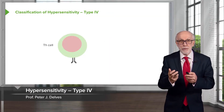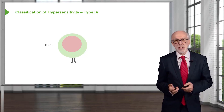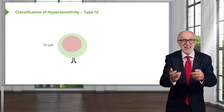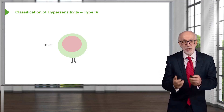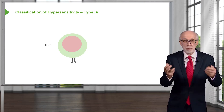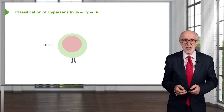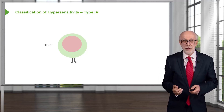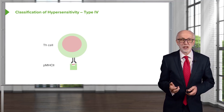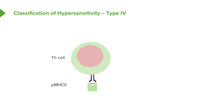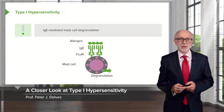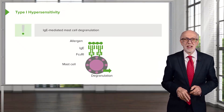Type 4 hypersensitivity is delayed type hypersensitivity. It's called delayed because it takes a little while to get going. With the other three types, antibody is already present and as soon as antigen enters the body the response happens immediately. For T cells, you need them to expand in number, proliferate, differentiate, and start secreting cytokines. So typically type 4 hypersensitivity takes two or three days before you see any effects. It involves recognition of peptide MHC class II by the T cell receptor, most commonly producing excessive amounts of cytokines.